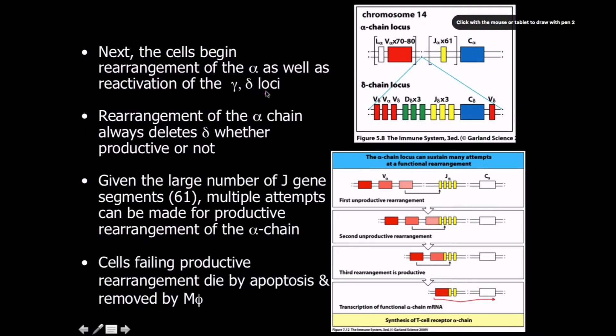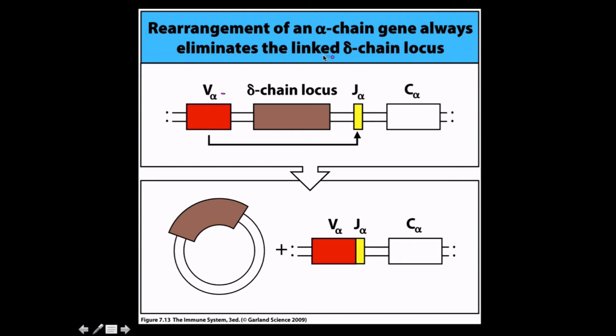The next thing that happens is the cells begin rearrangement of the alpha chain as well as reactivation of gamma and delta loci. I really feel like this is just a vestigial process. But the rearrangement of the alpha chain always deletes delta whether or not it's productive, because if we think back to somatic recombination, the delta chain becomes our signal joint, whereas the V and J come together to form our coding joint. So the signal joint gets excised and doesn't get replicated. Given the large number of J genes, 61 of them, multiple attempts can be made for productive rearrangement of the alpha chain. Alpha chains don't have as high a casualty rate as we saw with beta. Cells that fail to produce a productive protein die by apoptosis and are eaten by macrophages.